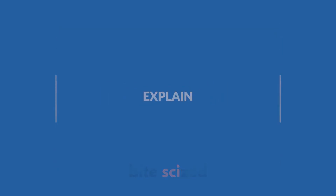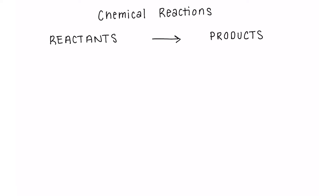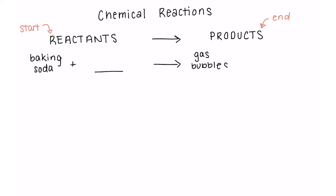Let's explain the science. The key to baking soda doing its primary job — making things rise — is that it undergoes a chemical reaction. Like any chemical reaction, we have reactants, which is what we start with, and products, which is what we end with. We're going to start with baking soda plus some other ingredient, and we know we end with gas bubbles, which is what causes the baked good to rise. Baking soda is technically called sodium bicarbonate and is made up of sodium, hydrogen, carbon, and oxygen.